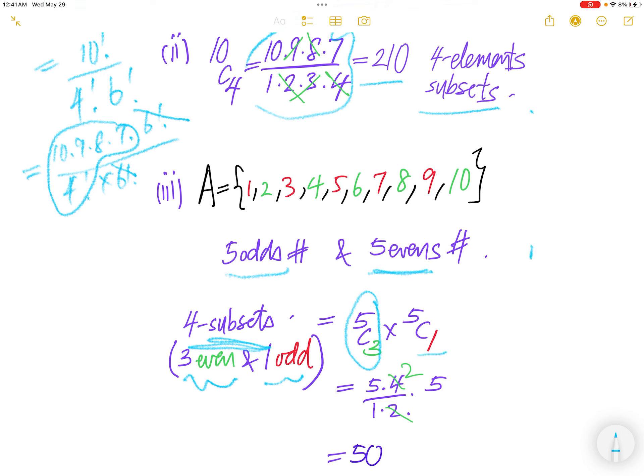Based on the multiplication rule, in order to get 3 even and 1 odd, you just multiply 5 choose 3 times 5 choose 1. 5 choose 3 is the same as 5 choose 2. So 5 down 1, 4 divided by 1 times 2. And then here,